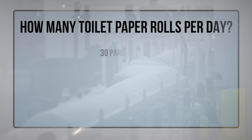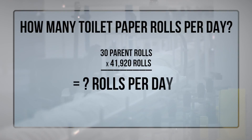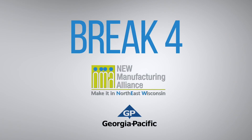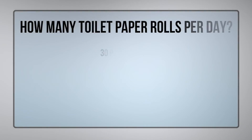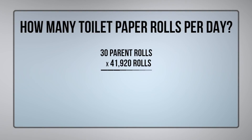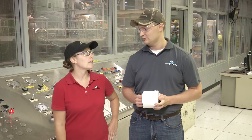If this paper machine can make 30 parent rolls each day, and each parent roll makes 41,920 toilet paper rolls, how many toilet paper rolls can you make in one day? To find the answer, we multiply the number of parent rolls made each day by the number of toilet paper rolls made per parent roll. This comes out to 1,257,600 toilet paper rolls. Now that's a lot of toilet paper!